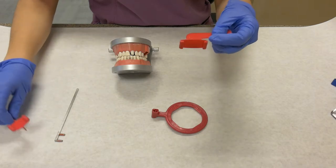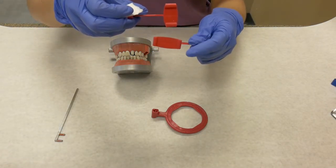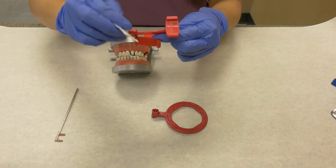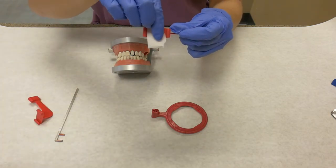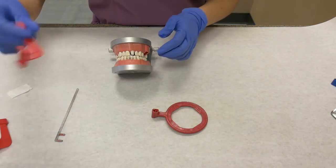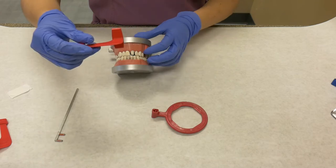There are two different sized bite plates for horizontal bite wings. We will use the larger one. The third bite plate is used for vertical bite wings.